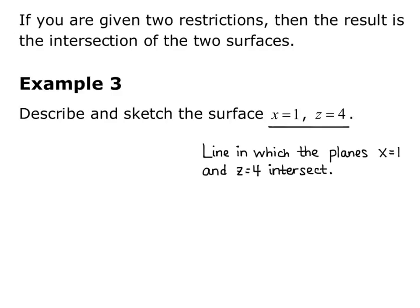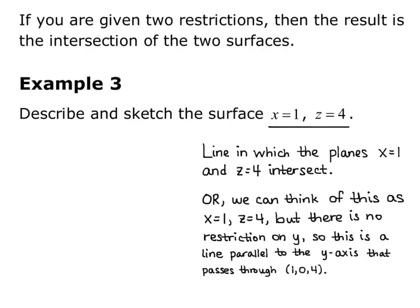Another way to think of this: x equals 1, z equals 4, but there's no restriction on y. So this is a line parallel to the y-axis because y can be anything, and it passes through the point 1, 0, 4, because we know x has to be 1 and z has to be 4.